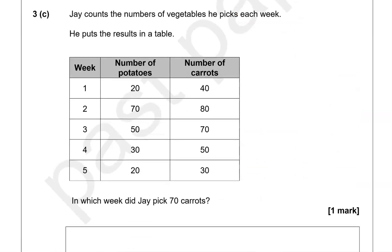Jay counts the number of vegetables he picks each week and posts the results in a table. In which week did Jay pick 70 carrots? Looking at the number of carrots column, 70 appears at week 3.